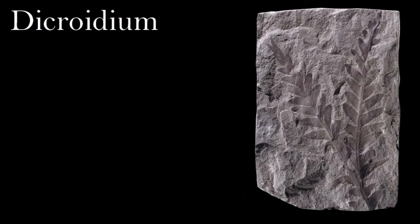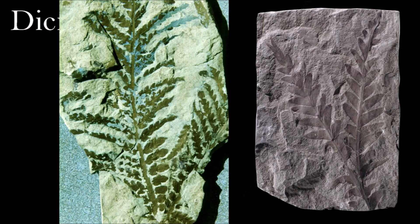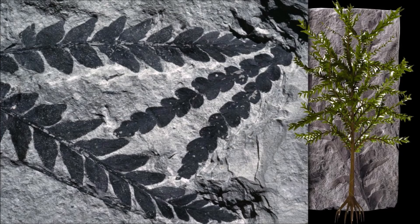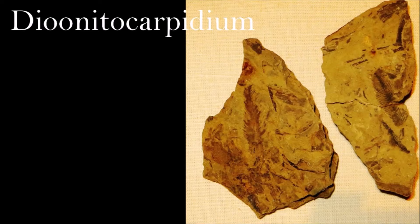Dicroidium belonged to a group of plants called the Choristosperms, which were seed plants of uncertain relationship found mainly in the Southern Hemisphere. They had fern-like leaves but produced seeds instead of spores. Dicroidium and other Choristosperms evolved in Gondwana, which was the southern landmass of the supercontinent of Pangaea during the Triassic. A fully grown Dicroidium would have been beyond the reach of ground-based herbivores, but all Choristosperms would have been browsed by animals at some stage in their lives. These browsers included the Triassic dicynodont Lystrosaurus, whose fossils have been found in the same rocks as Choristosperm remains in Antarctica.